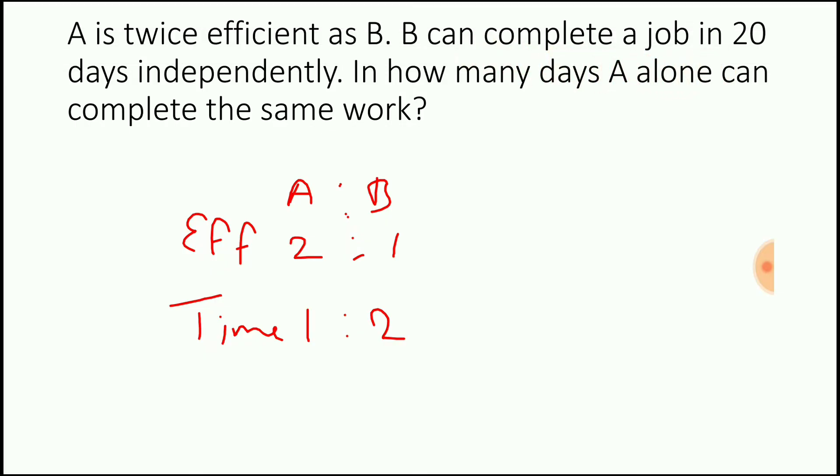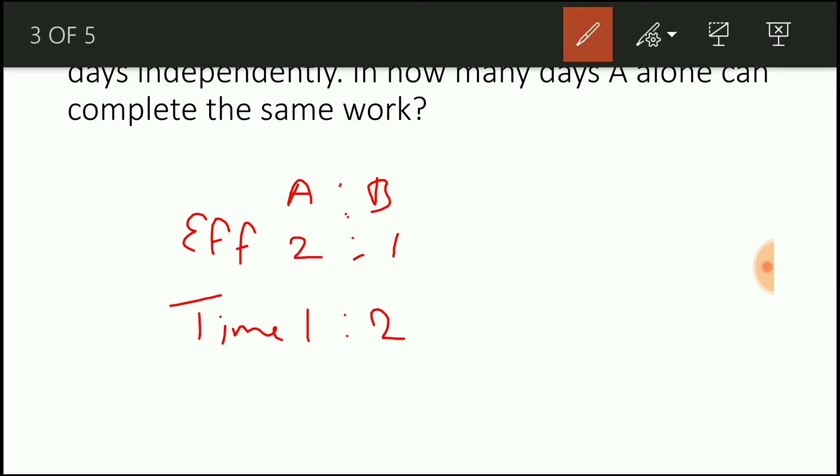So in the question it is given, B can complete a job in 20 days independently. So here the 20 days is nothing but 2 parts. So if 2 parts is 20 days, then what is 1 part? 1 part is half of 2 parts, which is 10 days.